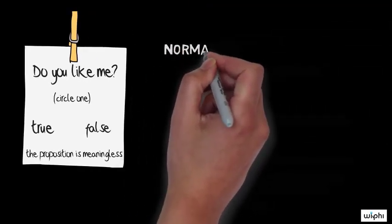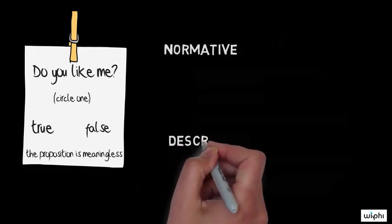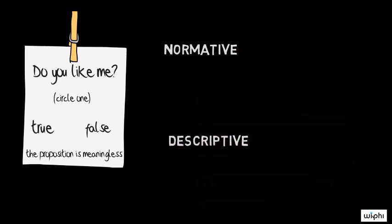Philosophers find it useful to distinguish between two different sorts of claims: normative claims and descriptive claims.